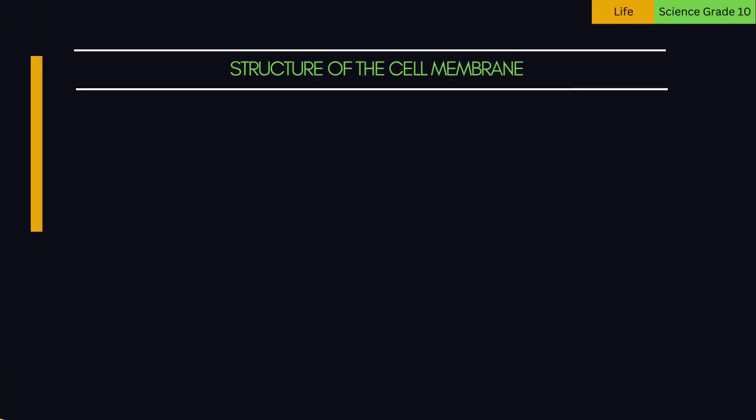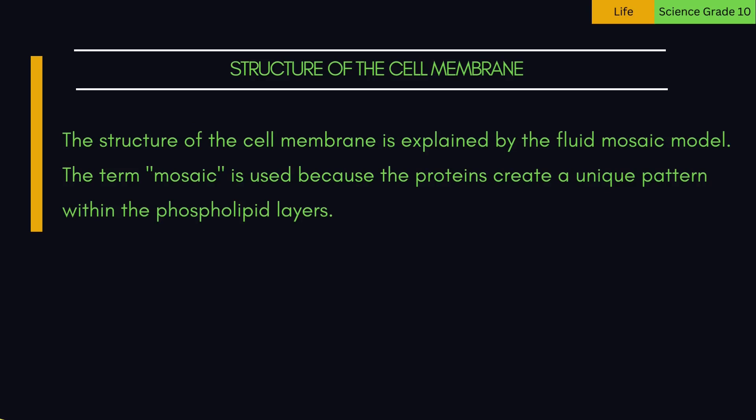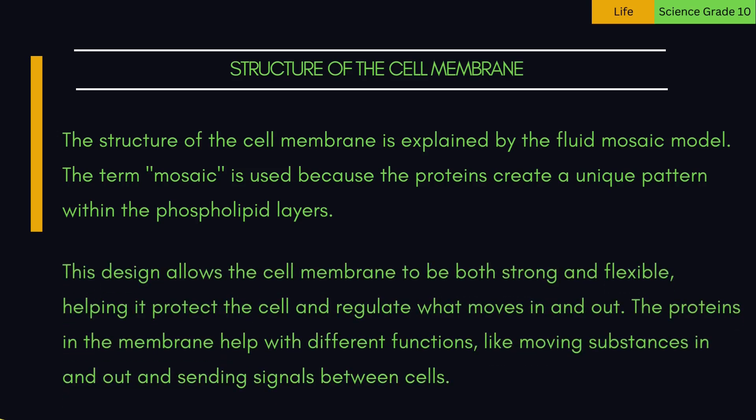The structure of the cell membrane is explained by the fluid mosaic model. The term mosaic is used because the proteins create a unique pattern within the phospholipid layers. This design allows the cell membrane to be both strong and flexible, helping it protect the cell and regulate what moves in and out. The proteins in the membrane help with different functions, like moving substances in and out and sending signals between cells.